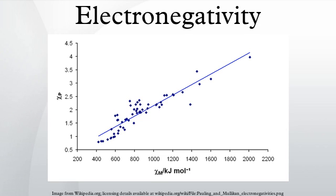Periodic trends: In general, electronegativity increases on passing from left to right along a period and decreases on descending a group. Hence, fluorine is the most electronegative of the elements, whereas cesium is the least electronegative, at least of those elements for which substantial data is available. There are some exceptions: gallium and germanium have higher electronegativities than aluminium and silicon, respectively, because of the d-block contraction. Elements of the fourth period immediately after the first row of the transition metals have unusually small atomic radii because the 3d electrons are not effective at shielding the increased nuclear charge, and smaller atomic size correlates with higher electronegativity. The anomalously high electronegativity of lead, in particular when compared to thallium and bismuth, appears to be an artifact of data selection — other methods of calculation show the normal periodic trends for these elements.